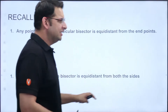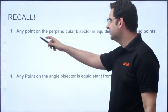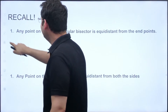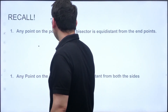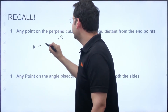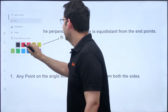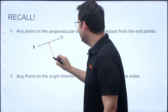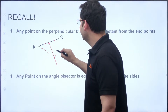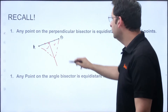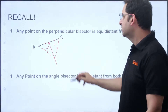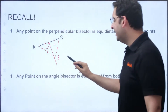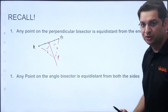Before I start, these are two very important things you should know. First: any point on the perpendicular bisector is equidistant from the two endpoints. So if there are two points A and B and you draw the perpendicular bisector of AB — which makes 90 degrees — any point on that perpendicular bisector is equidistant from A and B, because the two triangles are congruent and those two lengths are equal.